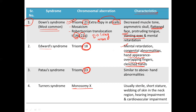Then we have Turner's syndrome, which is the monosomy of the X chromosome. Basically, these females have 44 plus X and nothing else. The characteristics are webbing of the skin in the neck, sterility, short stature, hearing impairments, and cardiovascular impairments.